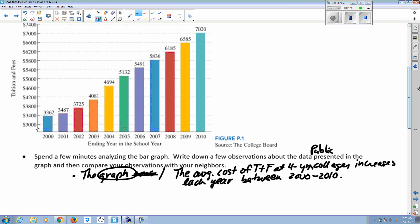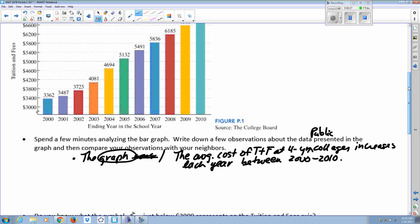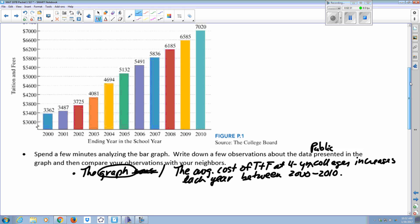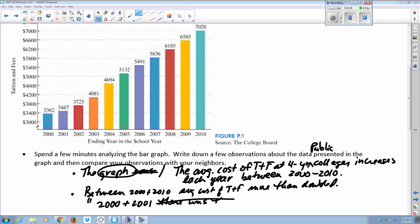What else did you notice about this relationship here? 2010 certainly was the most expensive, and some people actually talk about the fact that between 2000 and 2010, it more than doubled. That's another observation that between 2000 and 2010, the average cost of tuition and fees more than doubled. What else? From 2000 to 2001, there was the smallest increase.